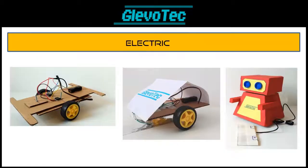Last time I showed you the simplest, most basic robots that can be made electrically without using electronics. In this video we'll take a look at more real robotics, which all use electronics as some form of intelligence.